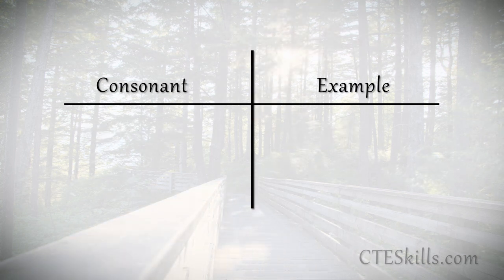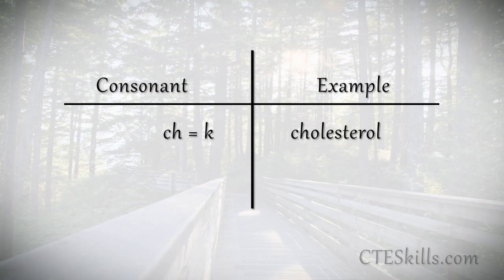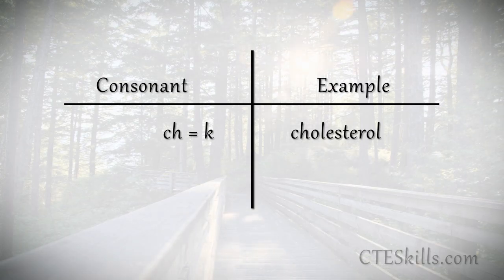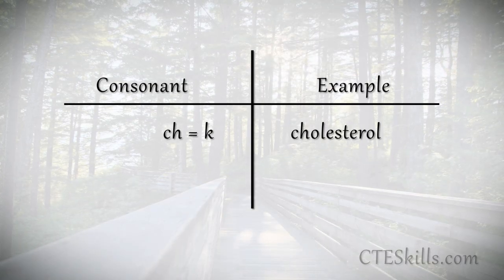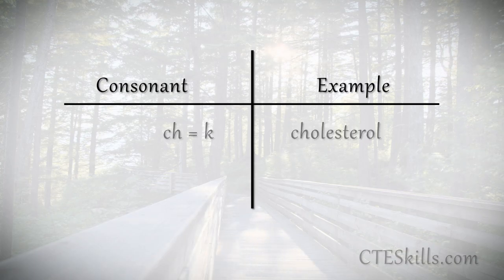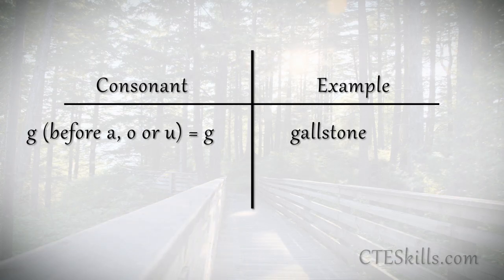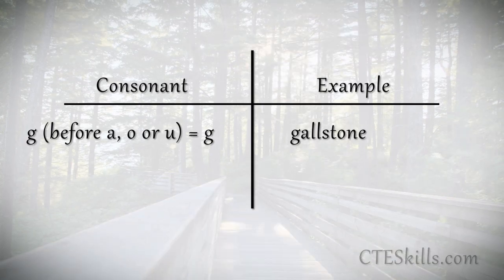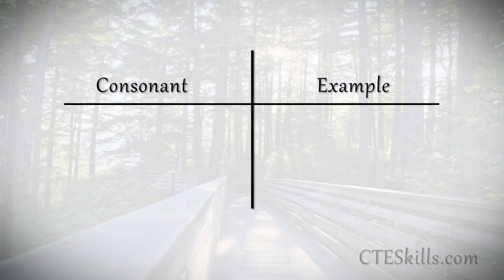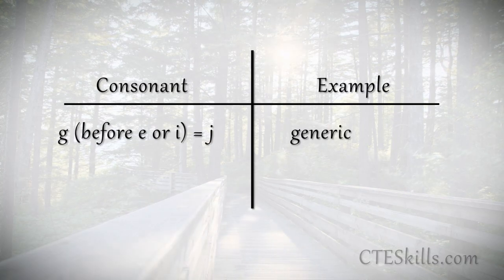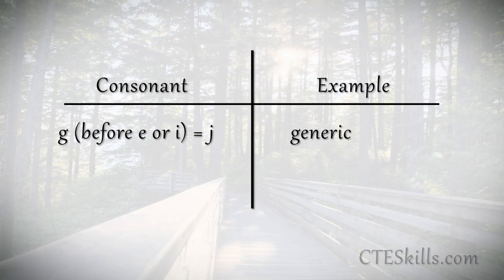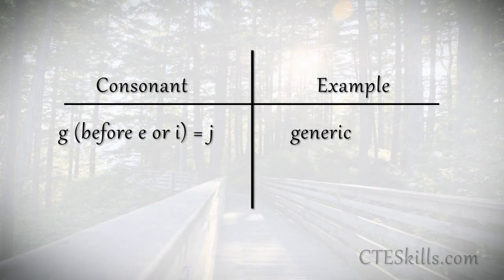In medical terminology, the CH combination equals the K sound, as in cholesterol. A G before A, O, or U is the hard G sound, like gallstone. If you have a G before E or I, that gives you the J sound. An example: generic.